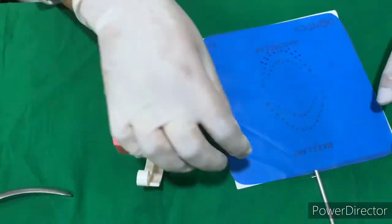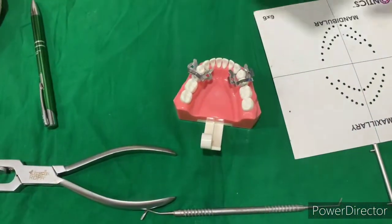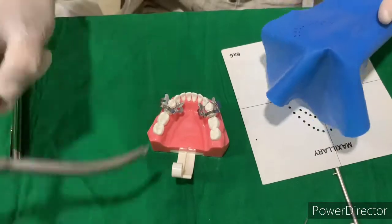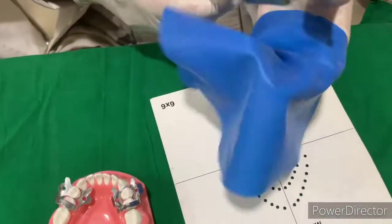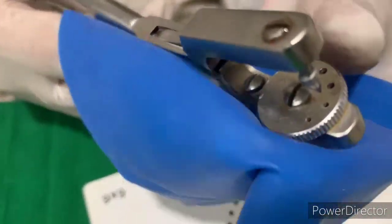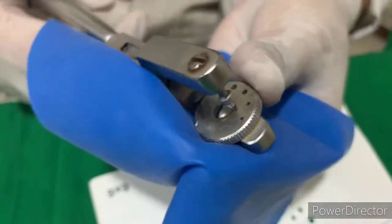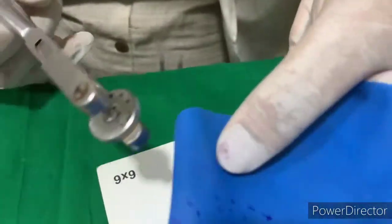Then we'll punch the sheet. First select the anterior hole, then punch it.